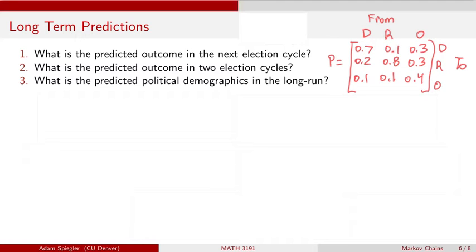So let's review how we can make some predictions, one, two cycles out into the future, and then far off into the future. So let's imagine we have an initial state vector X0, which is given above, which tells us the results of the current election. So let's imagine that 50% of the voters voted for a Democratic candidate, 45% of the voters voted for a Republican candidate, and 5% voted for a candidate who was not a Democrat or a Republican.